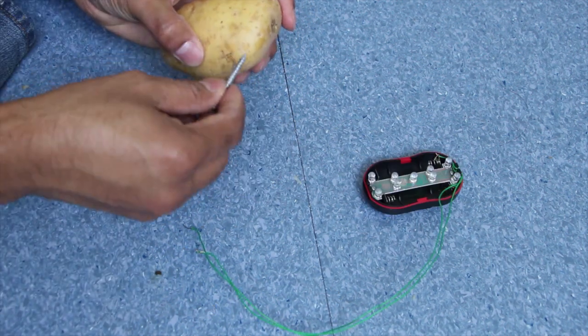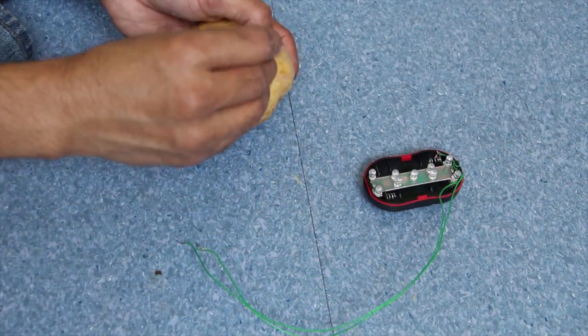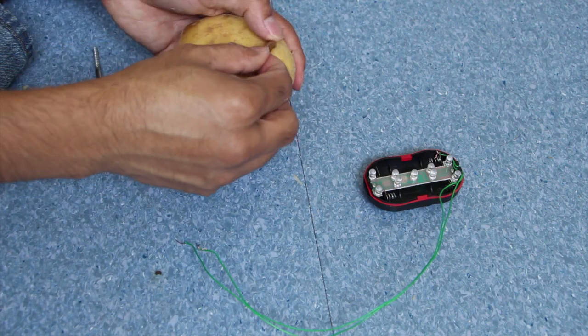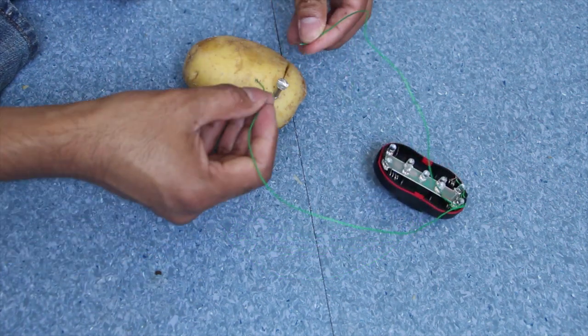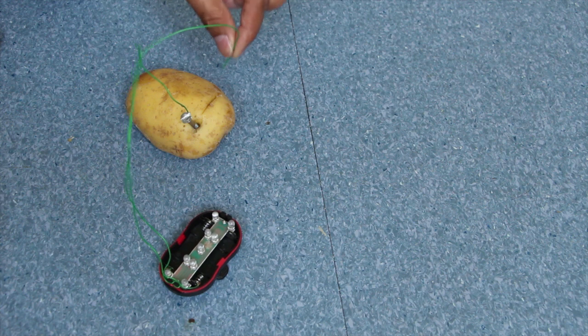A screw is pushed into the potato so that it touches the positive terminal. And a copper coin is placed in the same way that touches the negative terminal of the battery. Two wires are already connected to a series of LED lamps. And now, if I touch the hidden copper coin, the LEDs are lighting up.